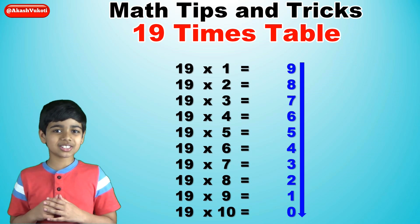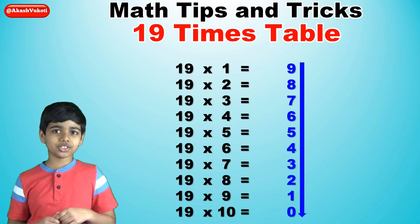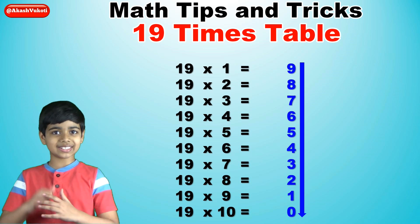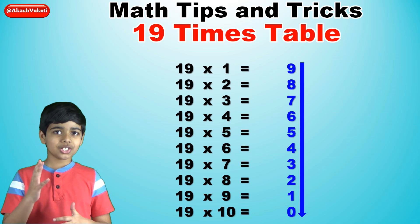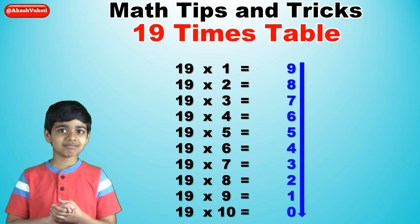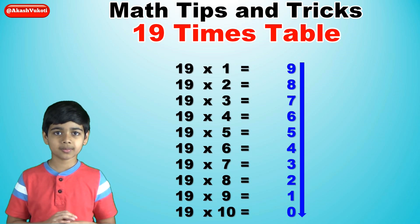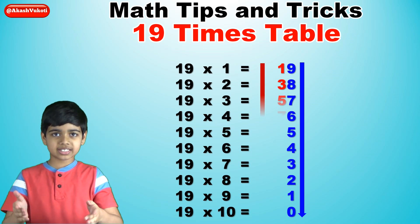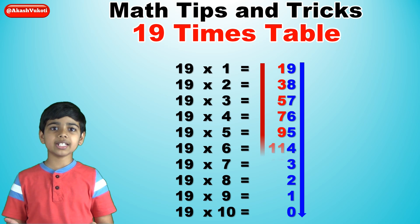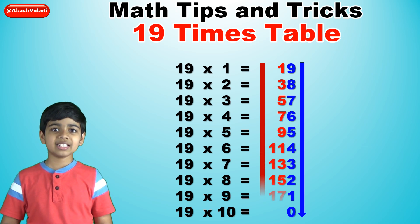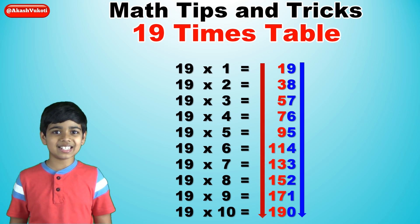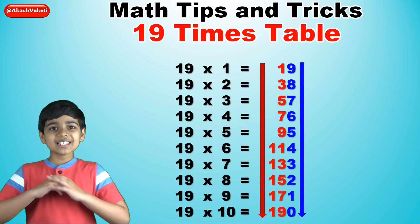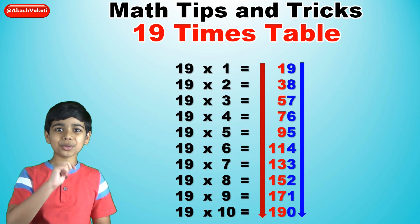Now, for the 10s digits, all we have to do is just write all the odd numbers from 1 through 19 in ascending order. So that means 1, 3, 5, 7, 9, 11, 13, 15, 17, and 19. And now if you take a look, you have — surprise, surprise — the 19 times table.